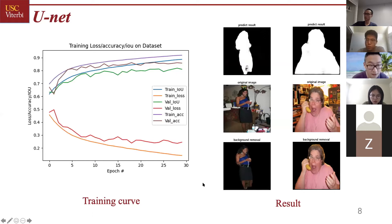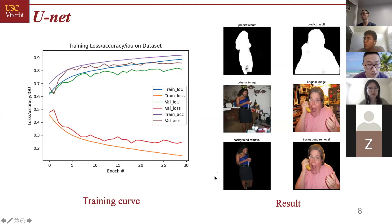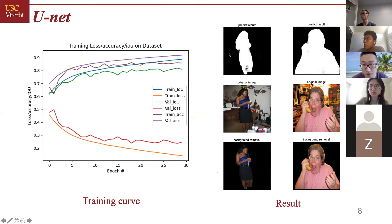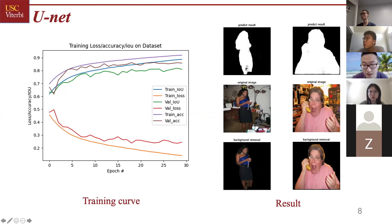Here is the U-Net result. As you can see, as the epochs go by, the IOU as well as the accuracy all go up. Finally, it can achieve an IOU over 70%, which is really good. Here are some results — this is a prediction mask. We multiply it with the original images and finally get the background removal images.